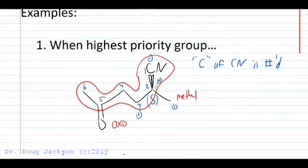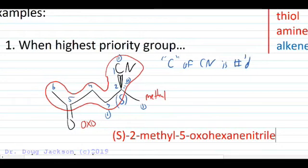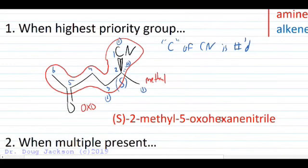Putting this name together, we would call this compound S, in alphabetical order with the groups, 2-methyl-5-oxo-hexanenitrile. We put the E in so we don't have hexan nitrile, two consonants together, we put in hexanenitrile to split that up with the E. So not a pentanenitrile, but a hexanenitrile counting that carbon of the nitrile.